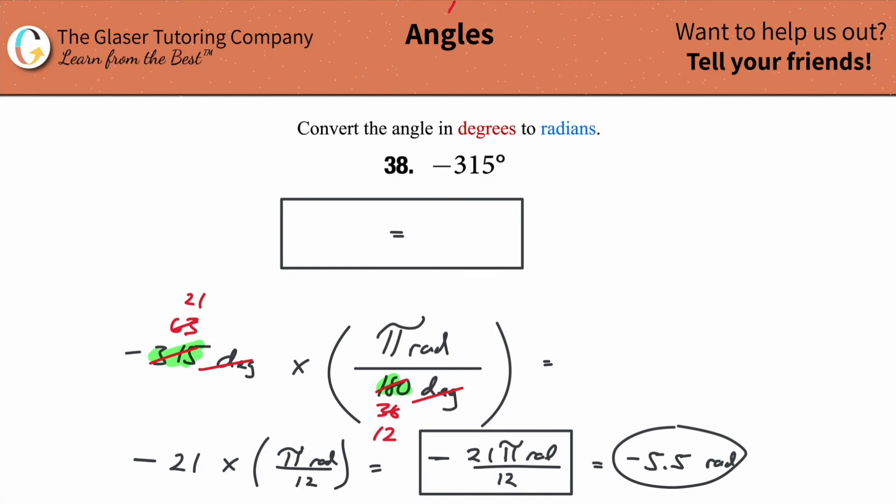How many degrees is that? That turns out to be about negative 315 degrees. This minus 5.5 radians.